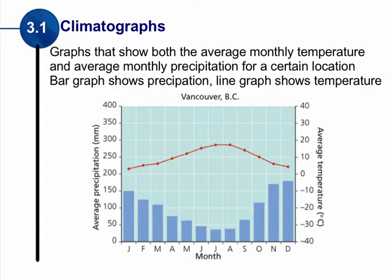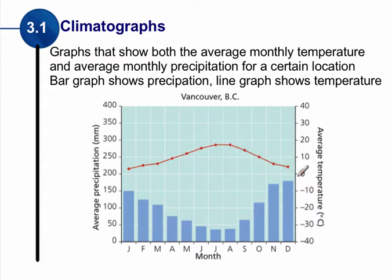Let's look at this graph for Vancouver. We can see the bars showing the amount of precipitation — in January, precipitation was about 150 millimeters, while in July it's under 50 millimeters. The line portion of the graph shows the average temperature. We can see that in the summertime through June, July, and August, there is low precipitation and a much higher temperature.